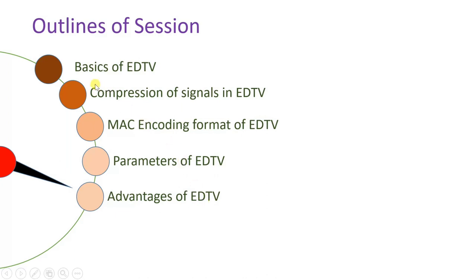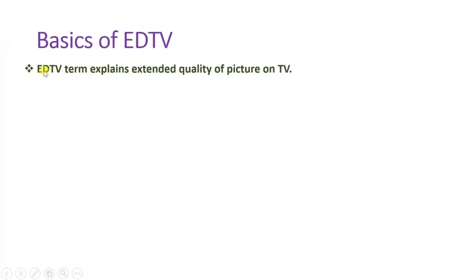Let us discuss the basics of EDTV. EDTV means Extended Quality of Picture on Television. EDTV is setting a base for Digital Broadcasting Television. Before EDTV, it was quite difficult to have digital broadcasting of television. But after Extended Definition Television format, it was possible to have digital broadcasting. In Extended Quality of Picture, we do not increase resolution of signal, but we change the pattern of video format.